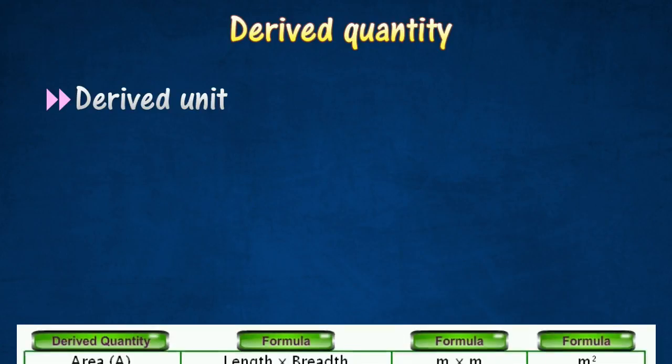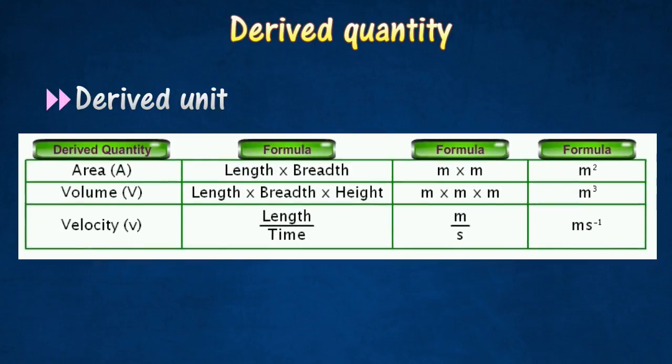Given here are a few examples of derived quantities and their relationship with base units. The units of the derived quantities can be derived from combinations of base quantities through multiplication, division, or both.